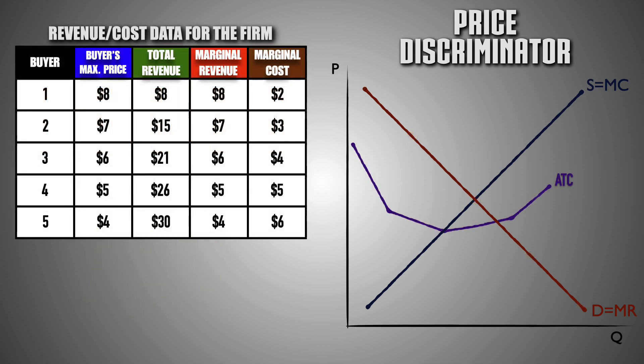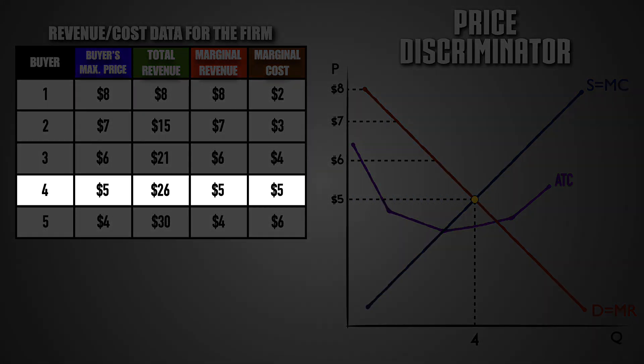And like all other firms, a price discriminator will use the optimal output rule to produce a profit maximizing level of output. Because marginal revenue equals demand for a price discriminator, the firm will maximize profits by producing a quantity where demand equals marginal cost. A price discriminator will continue to produce its output and charge individual consumers the highest price they are willing and able to pay until the price of the last unit sold equals the marginal cost of production.